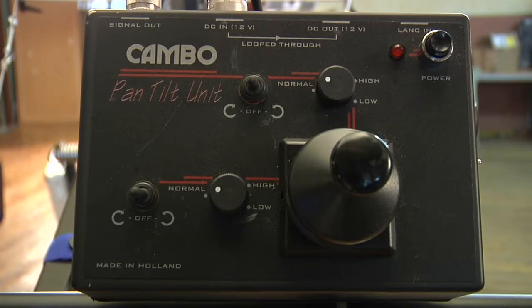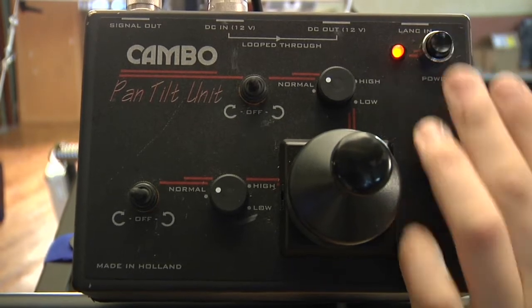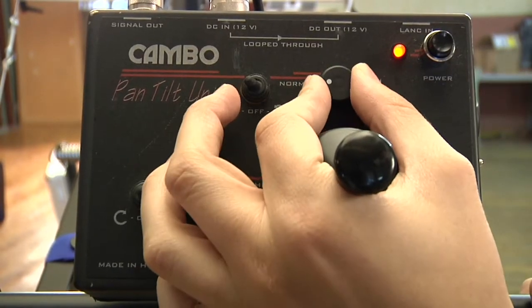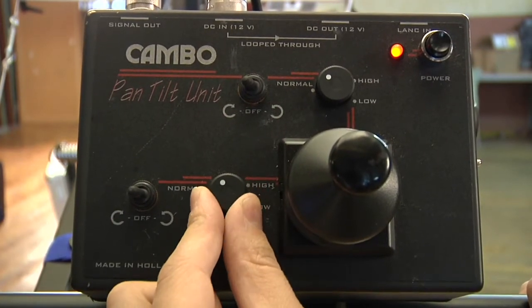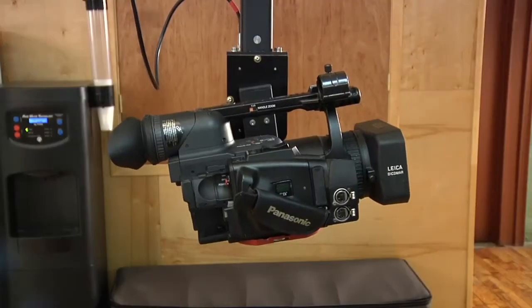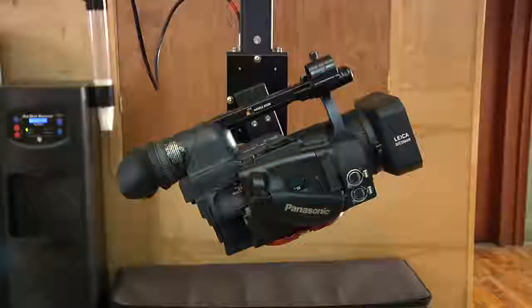Turn on the joystick by pressing this button. This top knob controls the direction and speed of the panning, and this bottom knob the direction and speed of the tilting. Pushing the joystick in the direction you want it to go will move the motorized head.